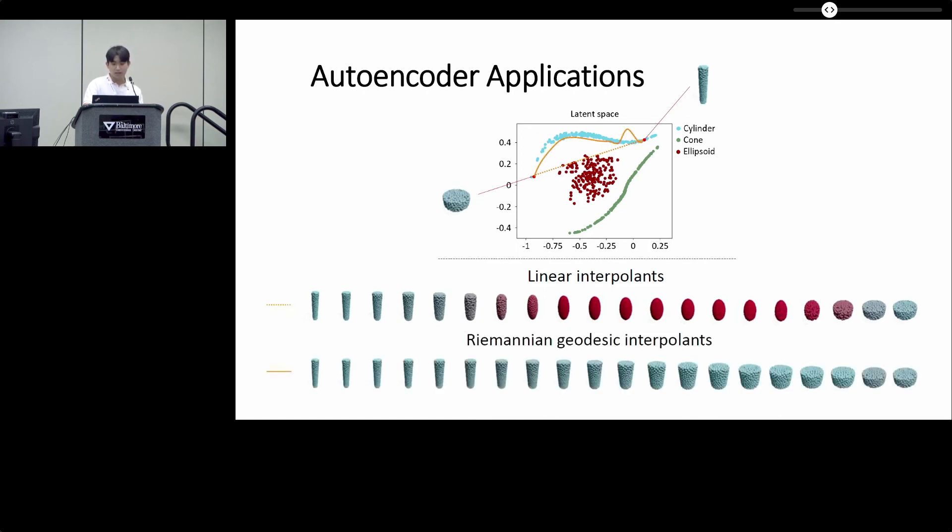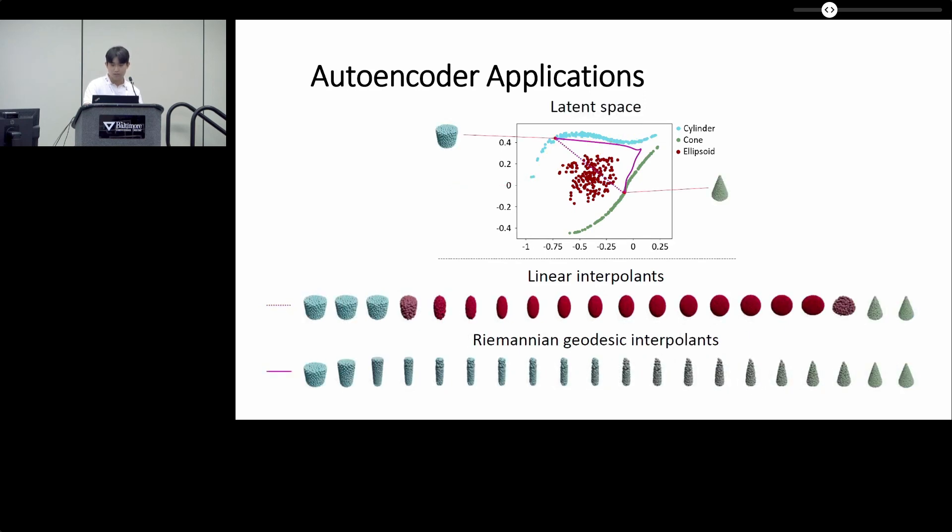On the other hand, if we interpolate this by using our framework, by considering the Riemannian geometric structure of the manifold, the tall cylinder is smoothly getting shorter and fatter and eventually transitions to the fat cylinder. The other example also shows similar results.